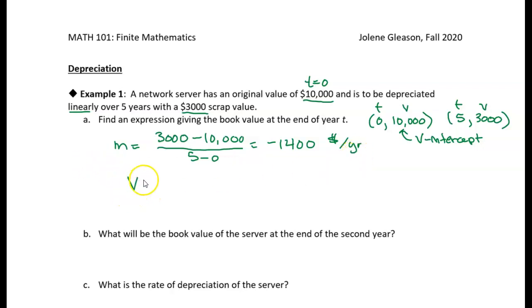Alright, so I want an expression for value in terms of time. So I'm going to write a function v of t. I'm going to call it v instead of f of x. I'm going to call it v of t, just because v seems more meaningful to me because it stands for value. So now I have the slope and I have the v-intercept or the y-intercept. So I can just write the equation as negative 1,400 t plus 10,000. Because this is the same as mx plus b, but my y-intercept is 10,000, my x is actually t and my slope is negative 1,400.